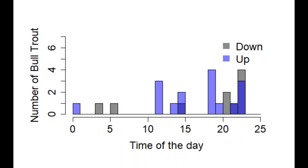A majority of both upstream and downstream migrations occurred between 1800 hours (6 pm) and 2300 hours (11 pm). The second most frequent time of day for migration was between 1100 and 1500 hours (11 am to 3 pm). We also saw a few fish migrate in the wee hours between 1 and 6 am.